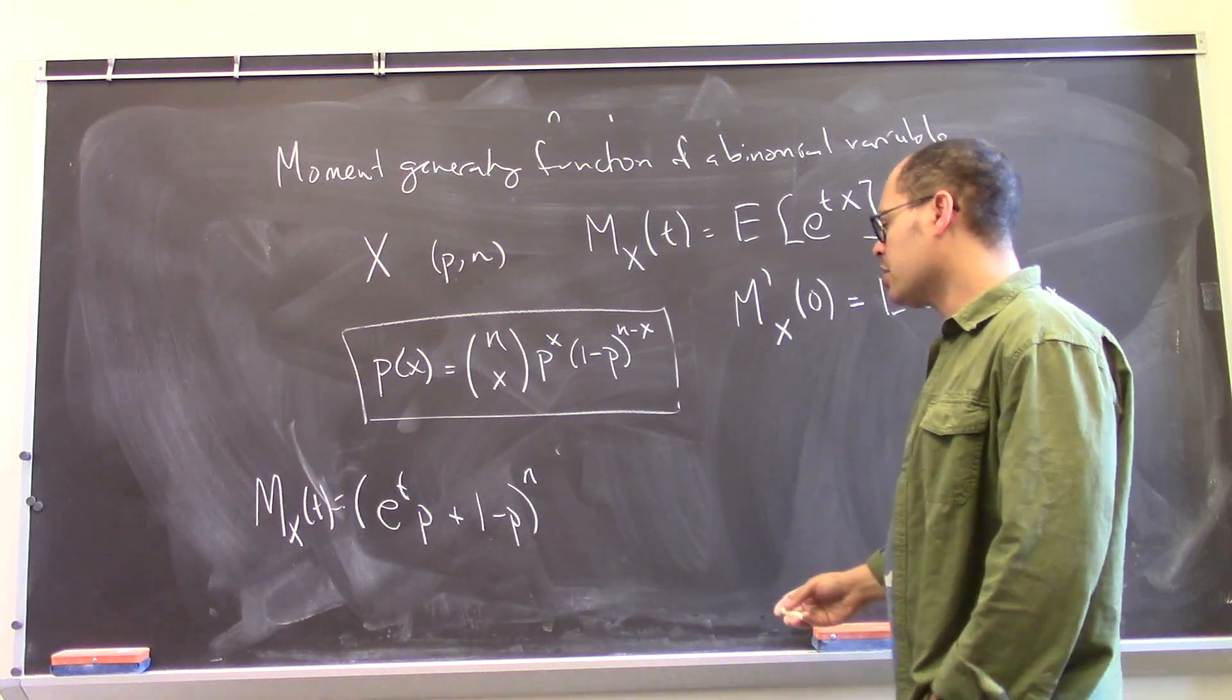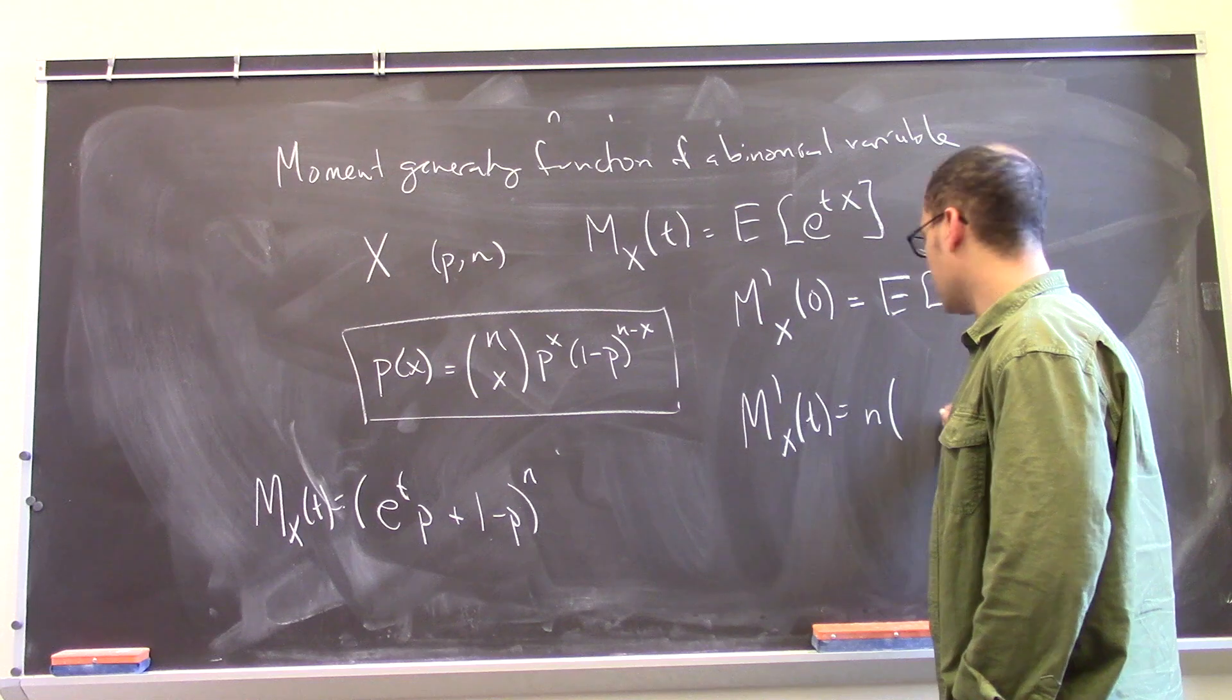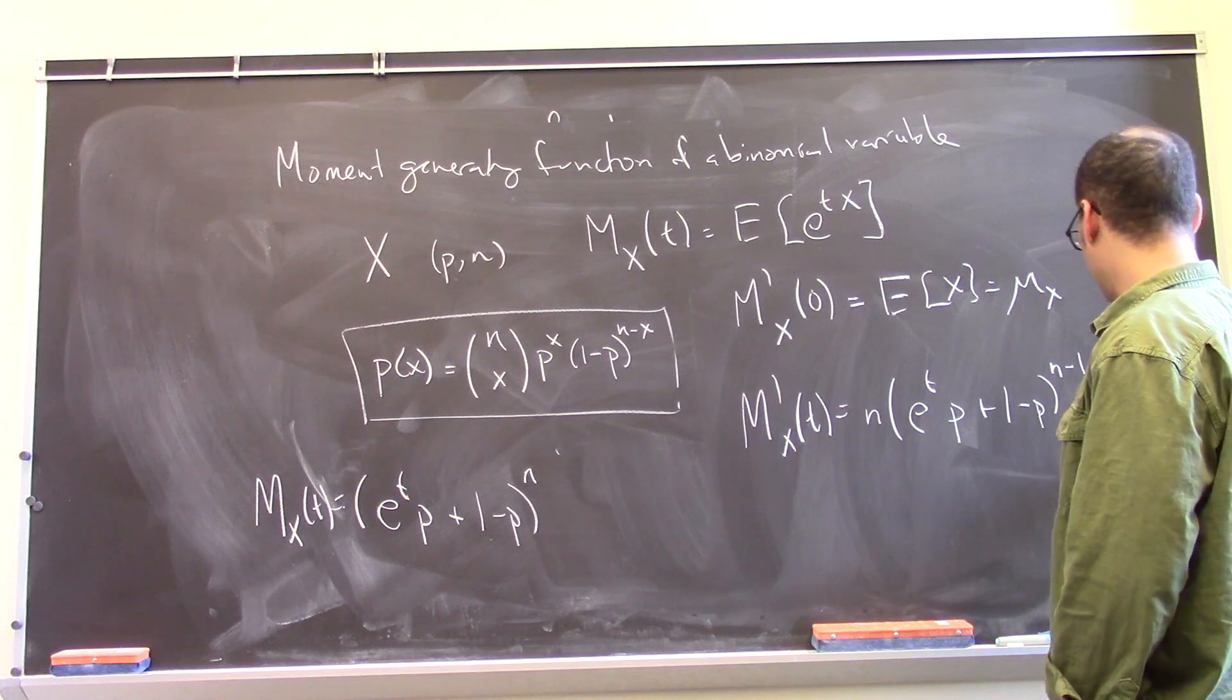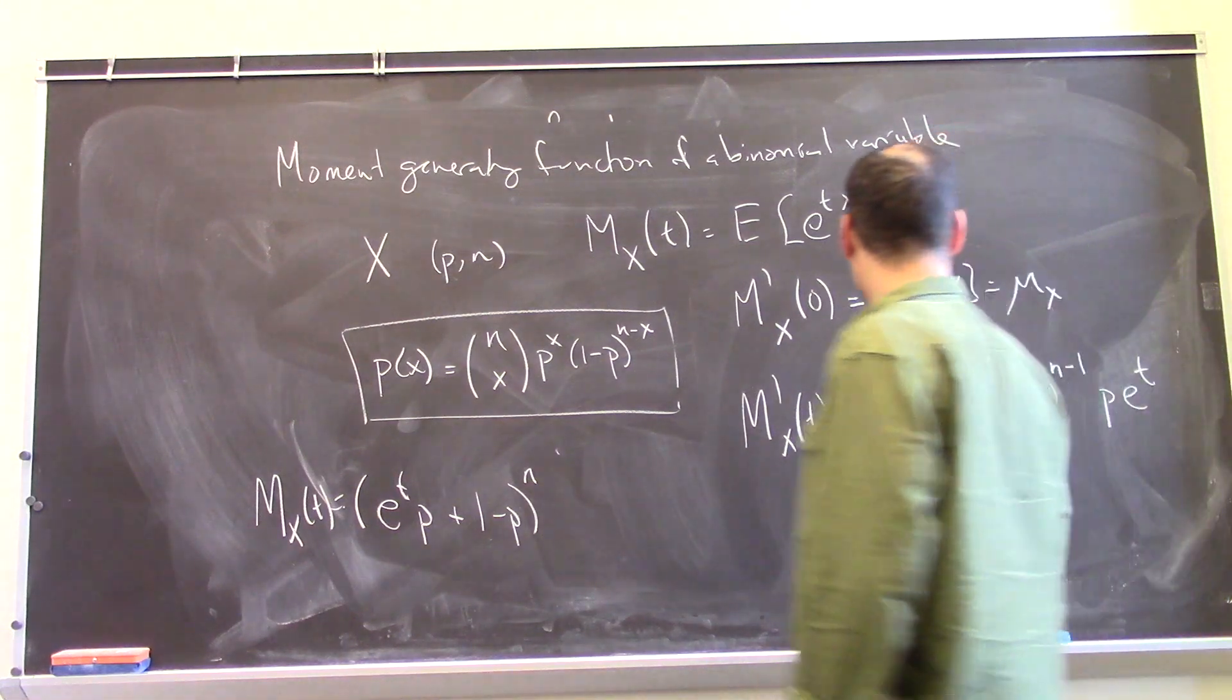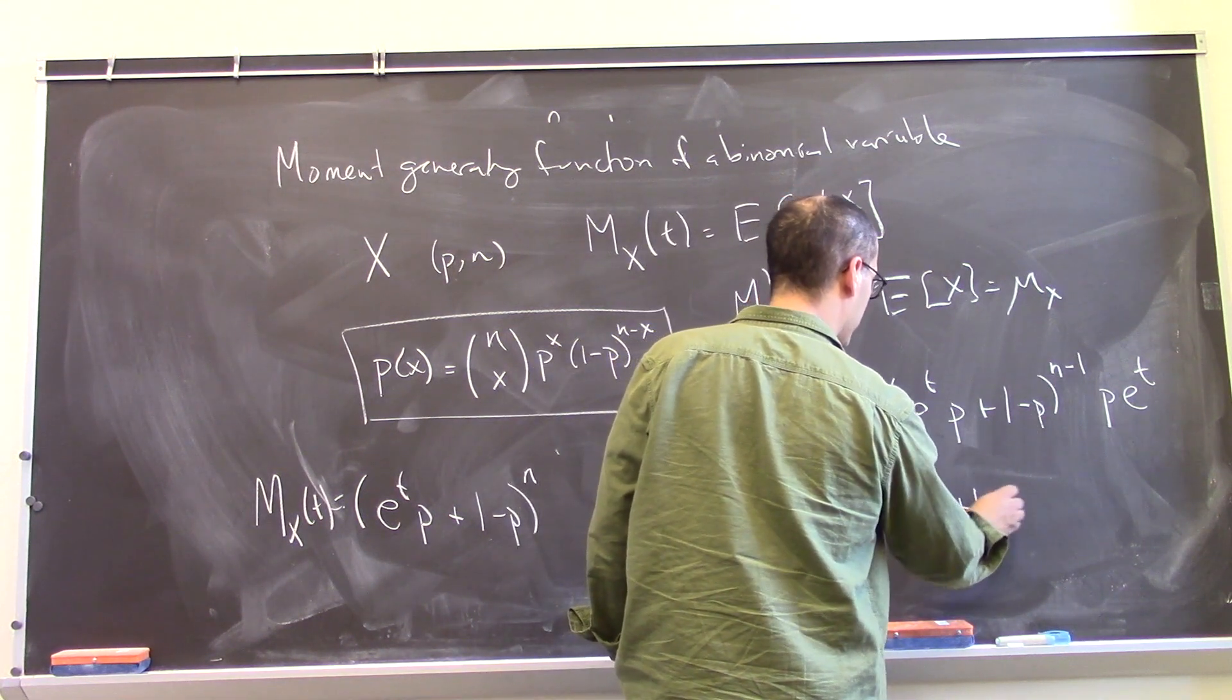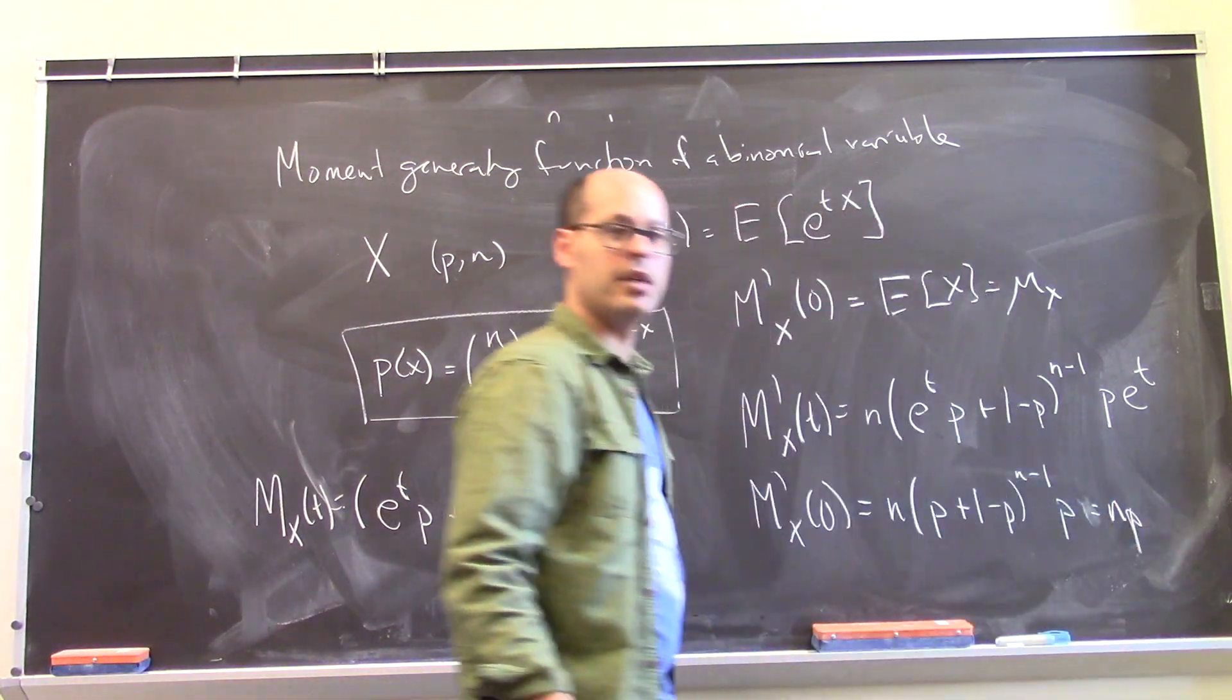And so for this thing, let's take the derivative with respect to t. Alright, so we have n times e to the tp plus 1 minus p to the n minus 1 times the derivative of the inside, which is p e to the t. And now I'm going to plug in t equals 0. And we get n times p plus 1 minus p, which is 1. I get a p there. e to the 0, that's another 1. So that's np. The nice familiar expression.